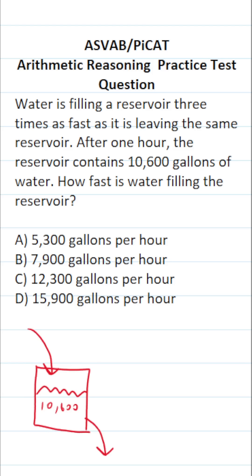I want to point this out: If water is leaving the reservoir at X gallons per hour, we know that it's going to be filling the reservoir three times as fast. So that's going to be 3X gallons per hour.